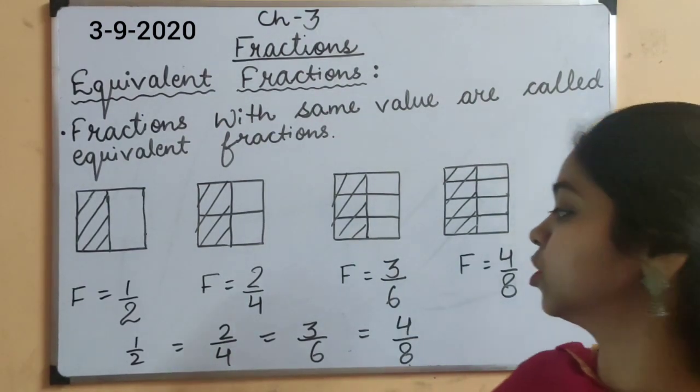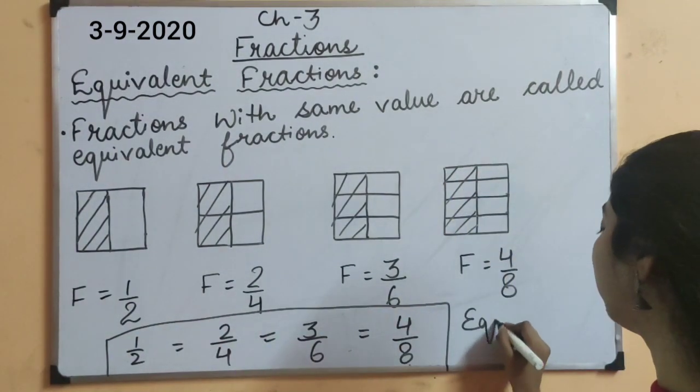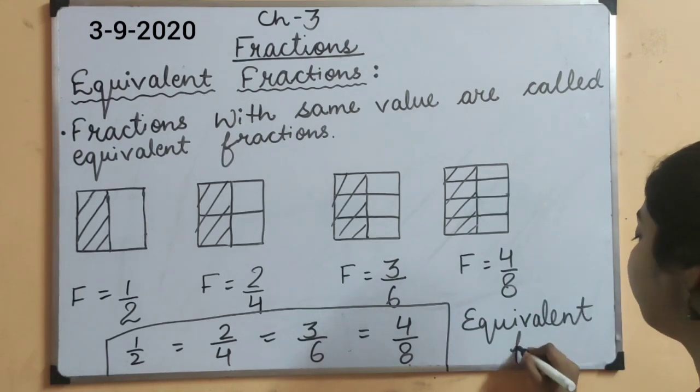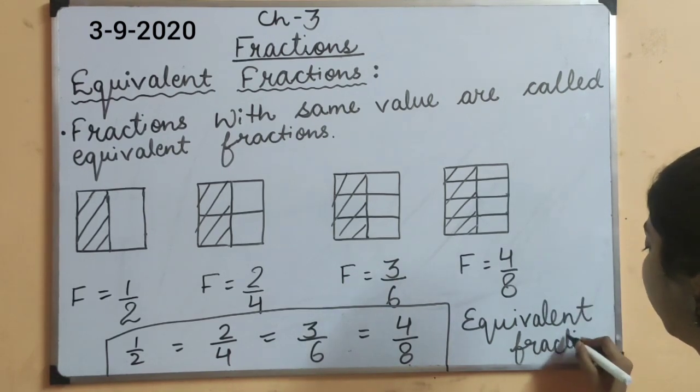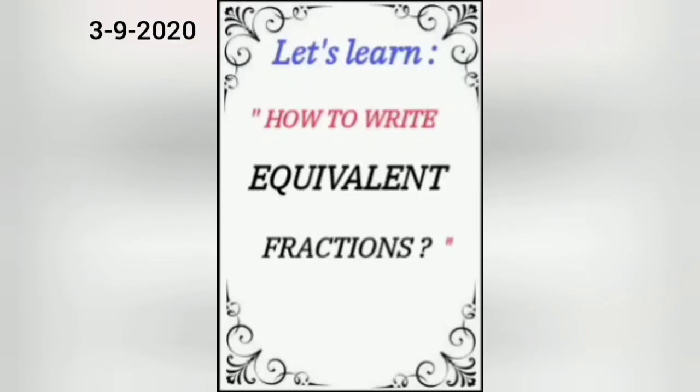We can also say that the fraction 1 upon 2 is equal to this fraction 2 upon 4 which is equal to this fraction 3 upon 6 and which is also equal to the fraction 4 upon 8. So, these fractions are known as your equivalent fractions which have same value.